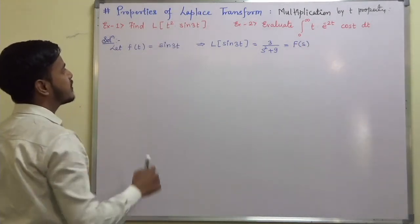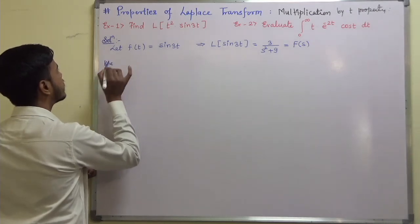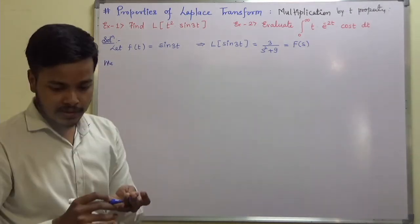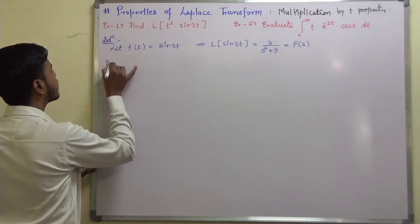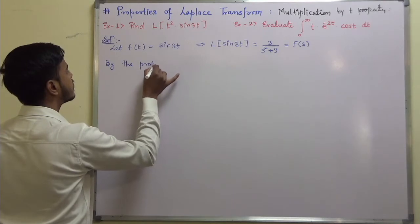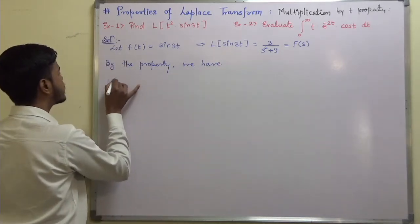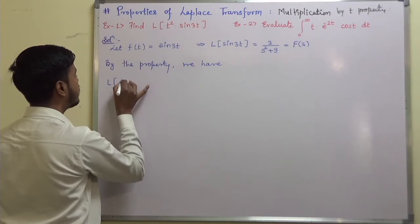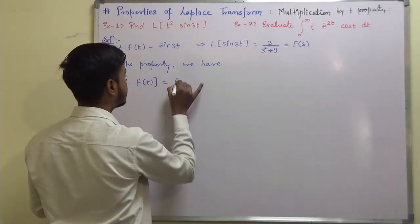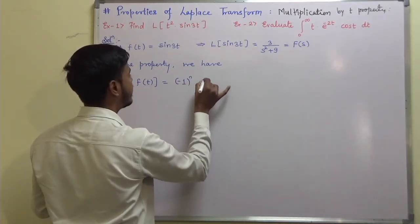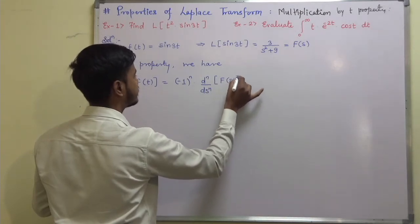As we are going to solve this problem with the help of property number 4, let us recollect what property 4 states. By the property we have: the Laplace transform of t to the power n into f(t) is equal to minus 1 to the power n times the nth order derivative of F(s). That is the property.